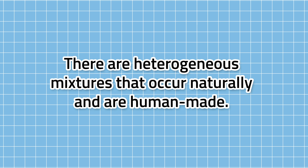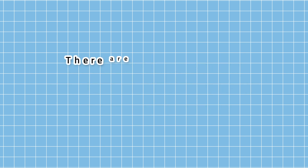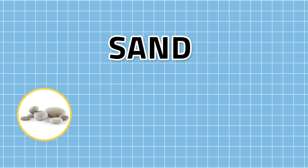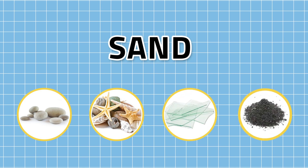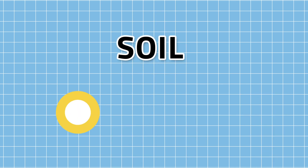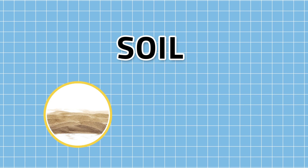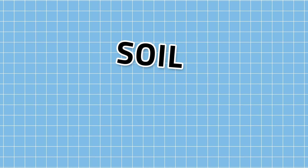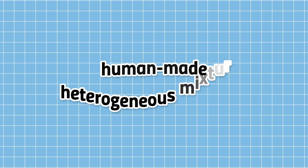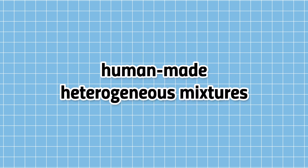Some examples of a natural heterogeneous mixture are sand and soil. Sand may be composed of pebbles, bits of shells, glass, and pieces of iron. While soil may have a combination of sand, dirt, rocks, and decayed matter.